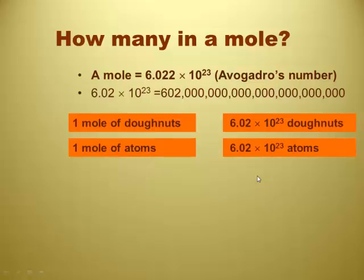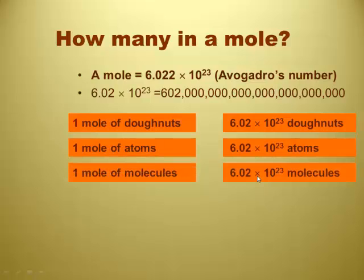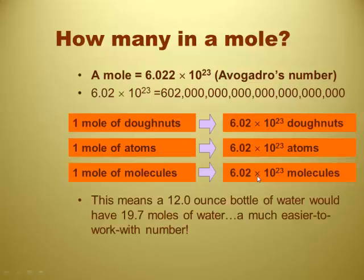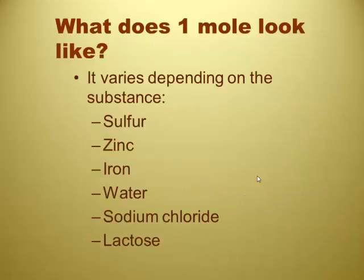And 6.02 times 10 to the 23rd donuts would be delivered to you? Well, I think I might get laughed at because it's a lot of donuts. That's a lot of donuts. One mole of atoms would be 6.02 times 10 to the 23rd atoms. A mole of molecules would be 6.02 times 10 to the 23rd molecules. What this means is, if we do the math, a 12 ounce bottle of water would have 19.7 moles of water in it. And that's a much nicer looking number than 9.89 times 10 to the 23rd. A lot easier. That's aesthetically pleasing.